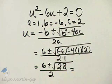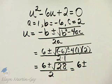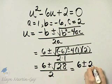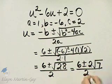I'll go to the right to save a little room. That's 6 plus or minus, 28 is 4 times 7, and the square root of 4 is 2, and then I still have the 7, all over 2.